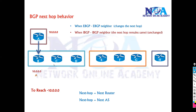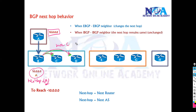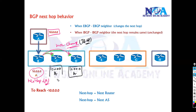When router A is trying to send an update to router B and router B receives it, it writes down that the next-hop is A's IP address. But in BGP, when the update is sent to the next routers within IBGP — meaning within the same AS — the router will not change the next-hop. So when it goes to router C, the next-hop address remains the same, and when it reaches router D, the next-hop still does not change.